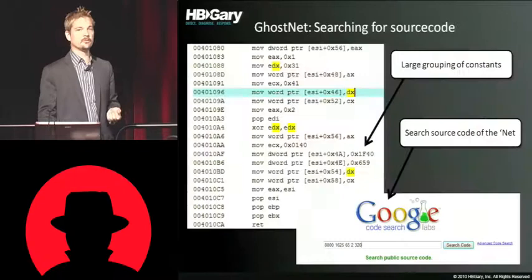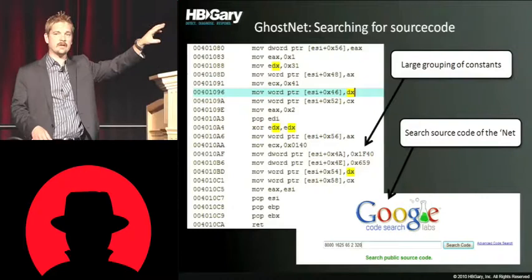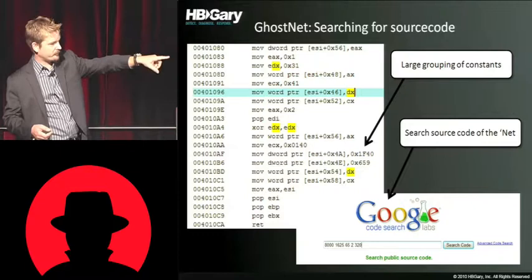They're not going to rewrite that every single morning. I went into the source code for GhostNet, and this is a really good trick for advanced fingerprinting. If you see large groupings of constants used together, those are great to go on Google CodeSearch and look for. See if you can find those constants used in any algorithms, especially things that are so unique. You can see on the bottom: 8000, 1625, 652, and 320 were all in this particular function.